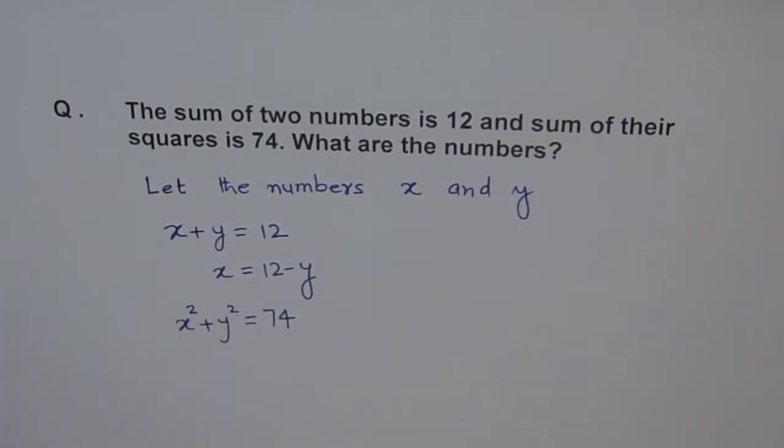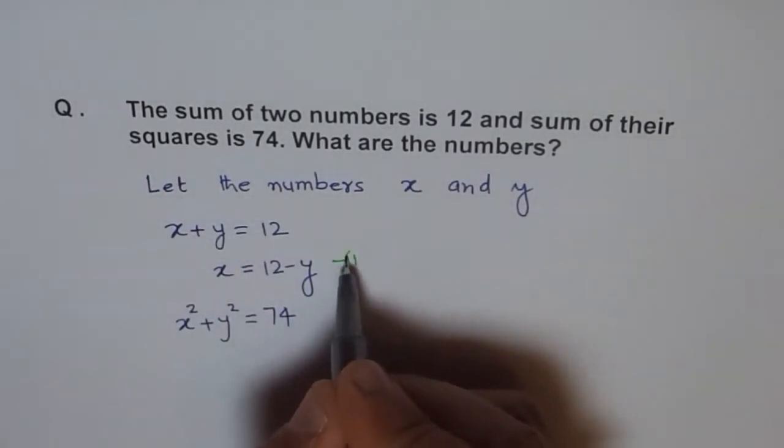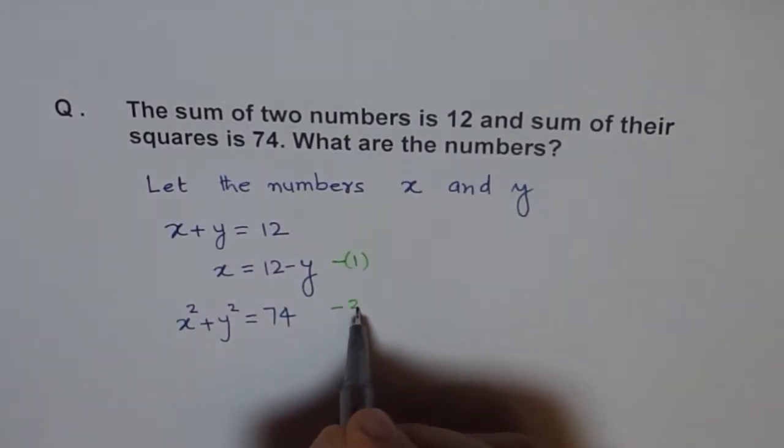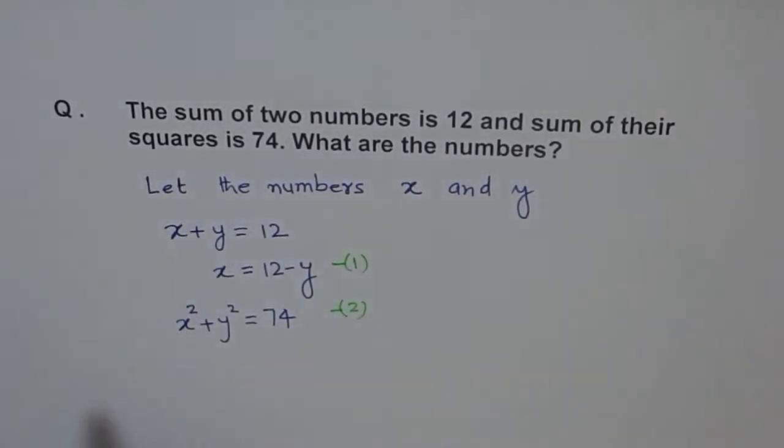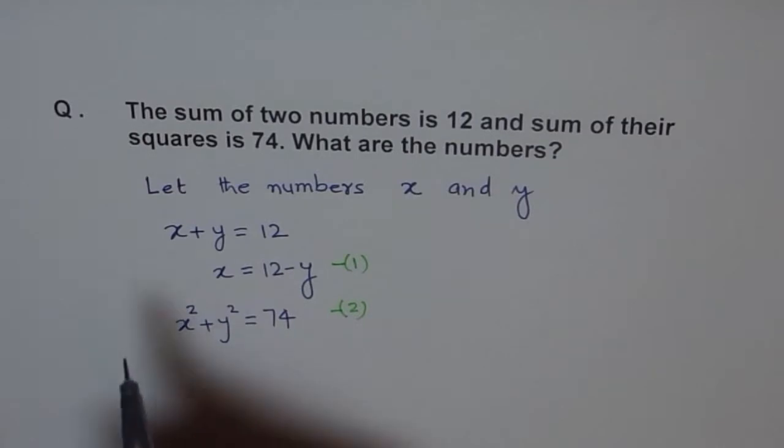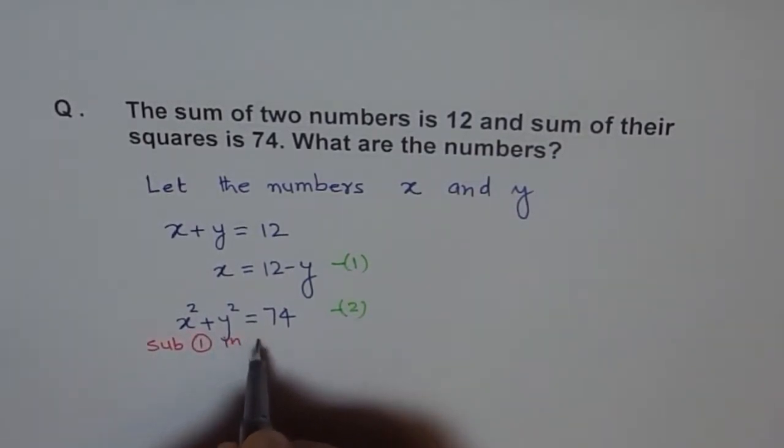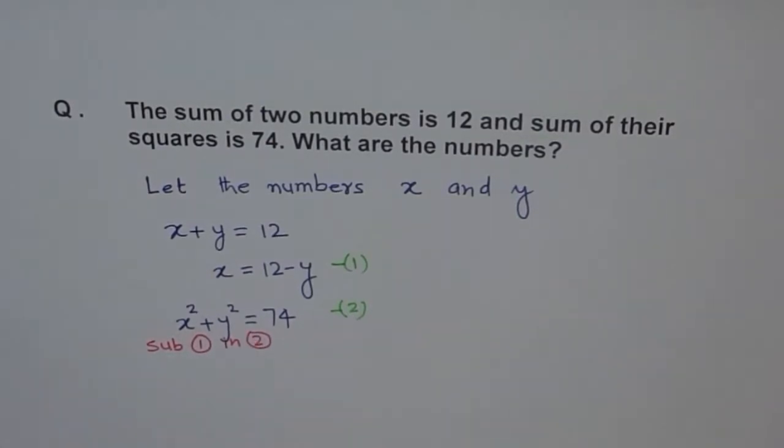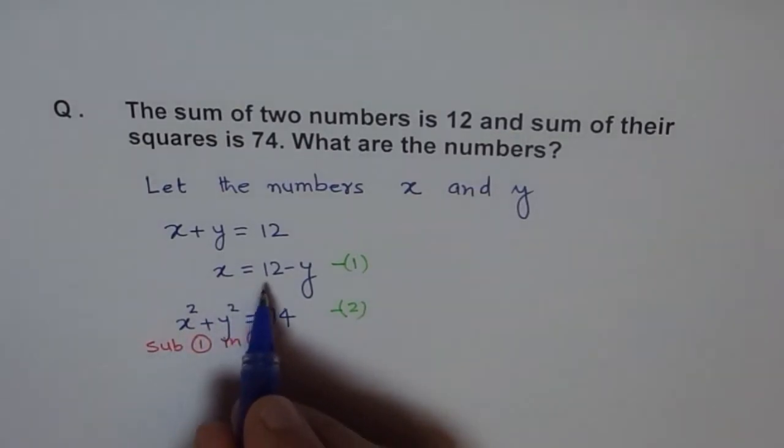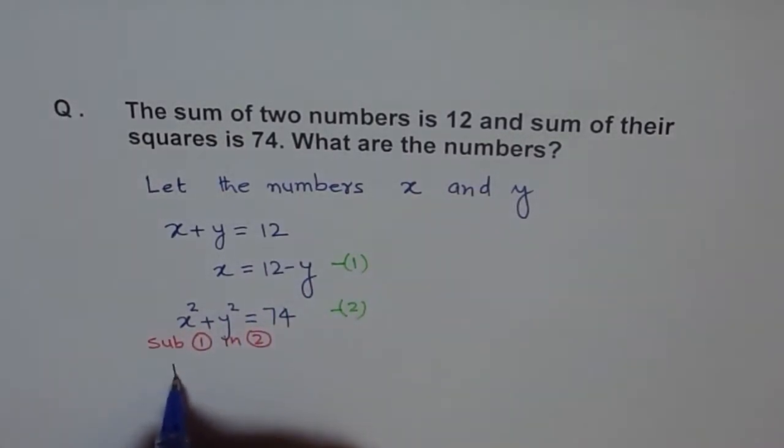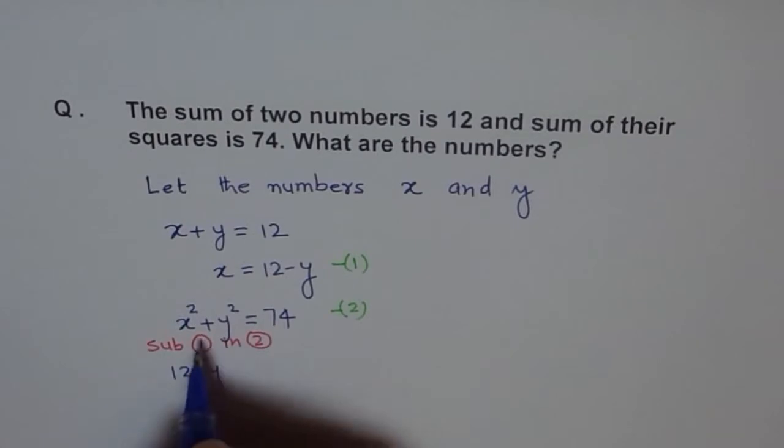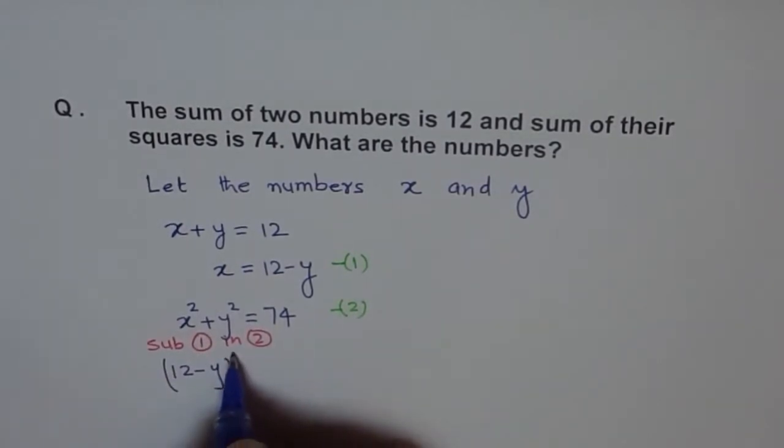Let me number the equations. Let's say this is equation 1 and this is equation 2. So, we are going to sub 1 in 2. Now, then what do we get? So, we get 12 minus y whole square plus y square equals to 74.